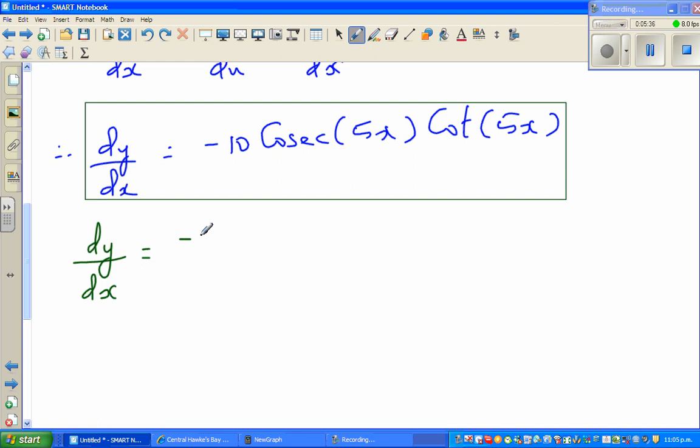So this is minus 10 times, cosec is 1 over sin, 5 times π by 4. I didn't write, so we want to find dy/dx at x equals π by 4.